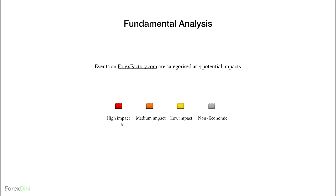Events on forexfactory.com are categorized as four potential impacts. We have red, which is high impact — for example, when President Trump speaks or a major event like the non-farm payroll (NFP), which happens on the first Friday of every month. Next, we have medium impact, not as much as high impact. We also have low impact — don't expect much volatility during low impact events, but anything can happen. Last but not least, non-economic impact, which basically means it's not going to have a major impact on the market.